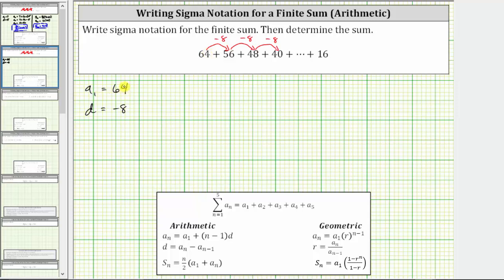And now we can use a sub 1 and d to determine the formula a sub n that will generate the terms of the series. Where a sub n is equal to a sub 1, the first term of 64, plus the quantity n minus 1, times the common difference d, which is negative 8.